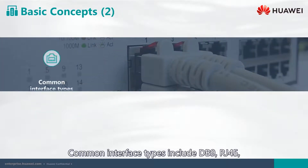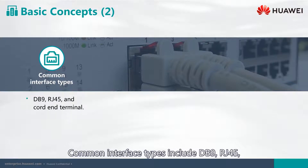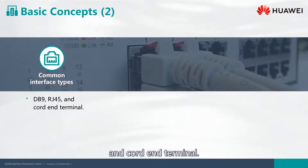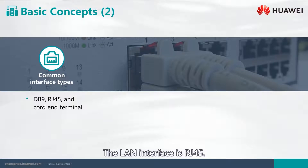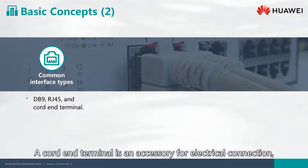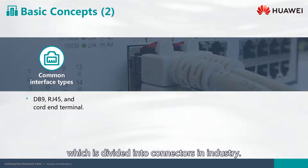Common interface types include DB9, RJ45, and Cord End Terminal. DB9 is the serial port of nine pins. The LAN interface is RJ45. A Cord End Terminal is an accessory for electrical connection, which is divided into connectors in industry.